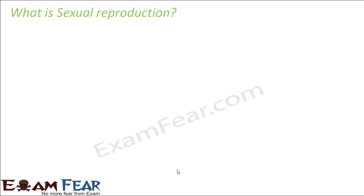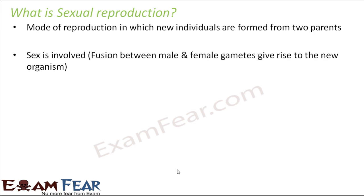So what is sexual reproduction? It is more common in higher animals and plants. In this mode of reproduction, new individuals are formed from two parents — you need one male and one female. Therefore sex is involved, and there is distinction between male and female sexes. The fusion between the male and female gametes gives rise to the new organism. Gametes are the sex cells — the male contributes one sex cell, the female contributes one female sex cell, and then both fuse together to form the new organism.